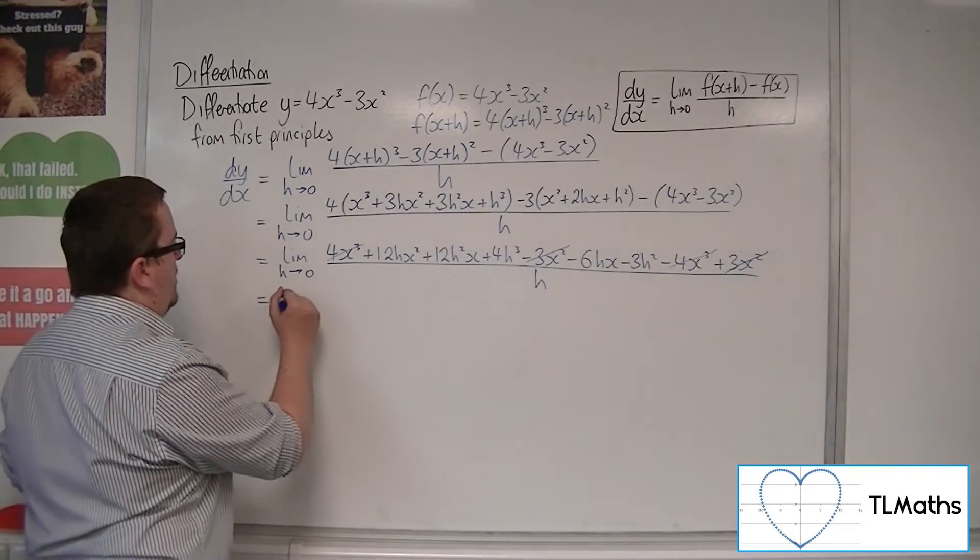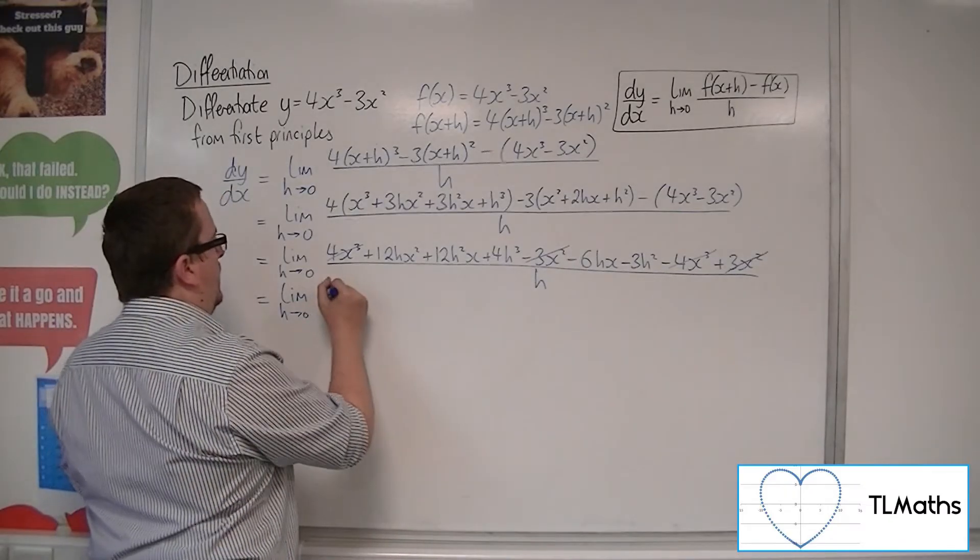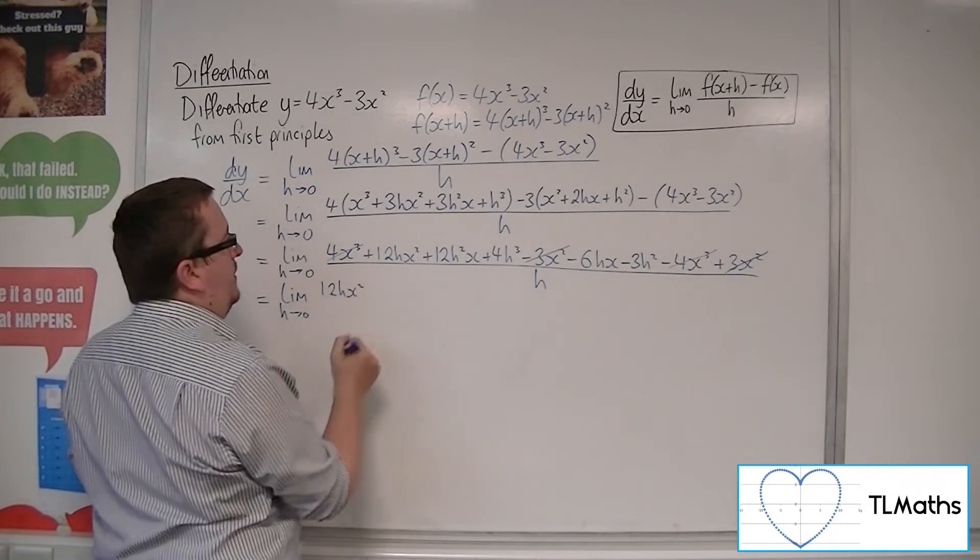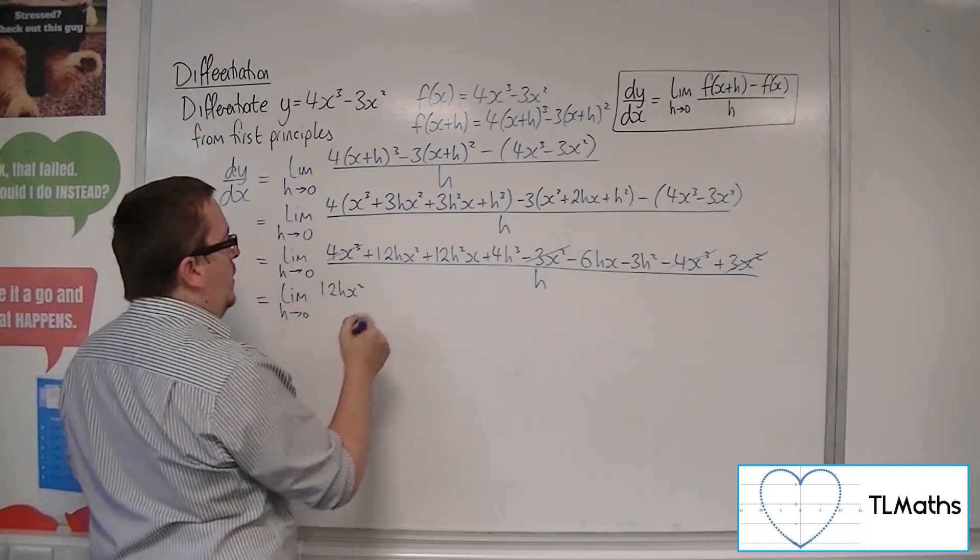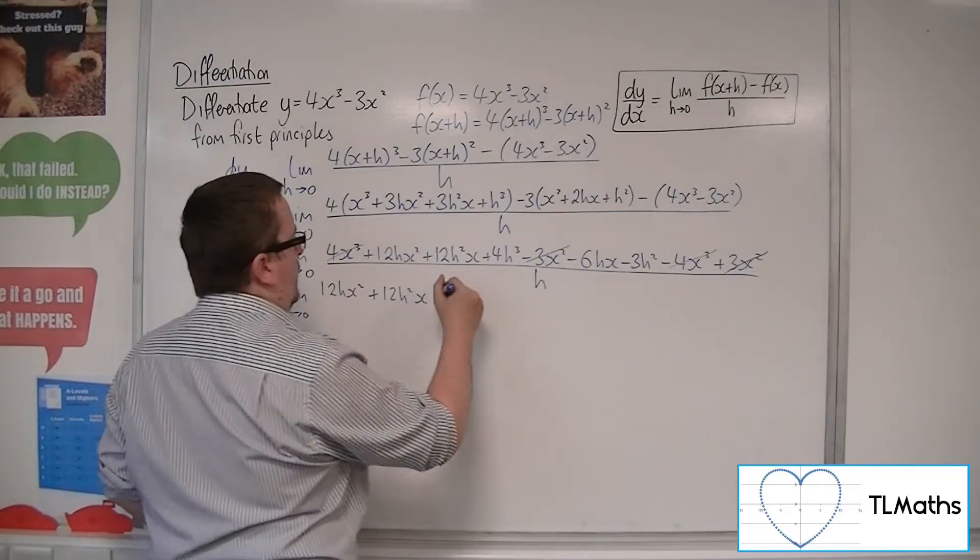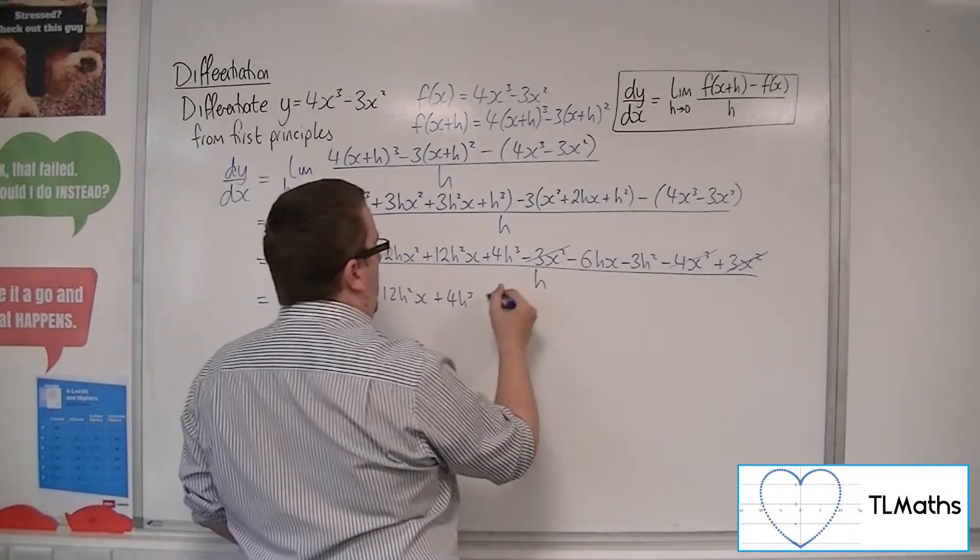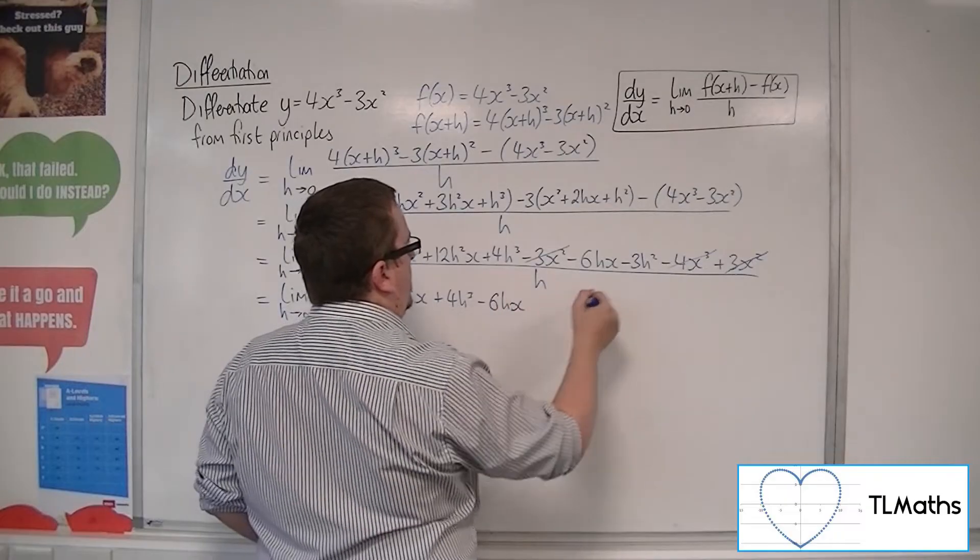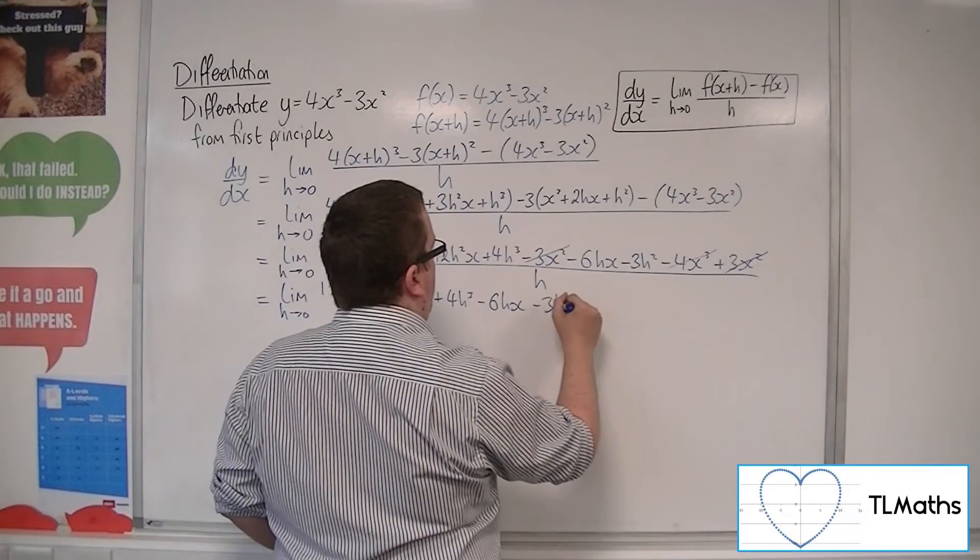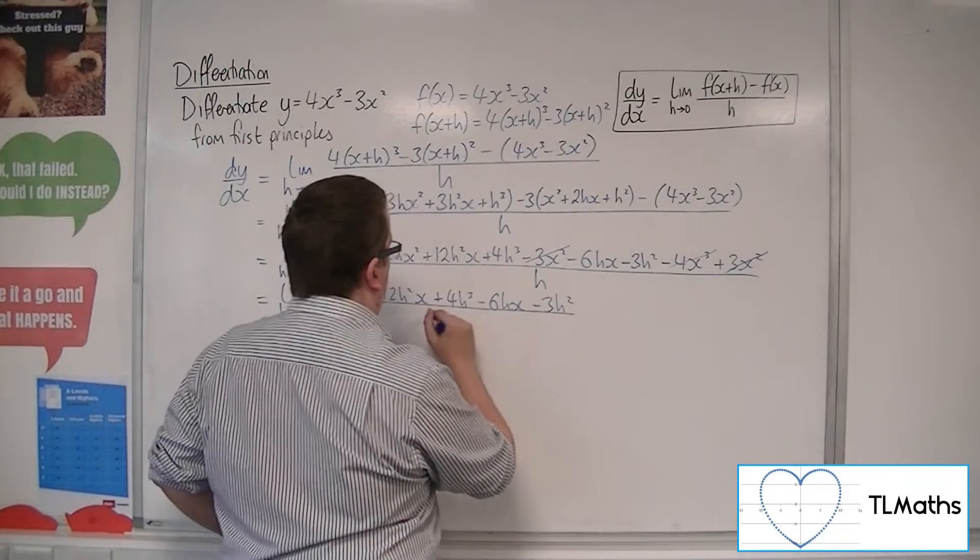Okay, so we're ready to go. So we've got what we've got left over. We've got the 12hx squared, we've got the 12h squared x, we've got the 4h cubed, we've got the minus 6hx, we've got the minus 3h squared, all over h.